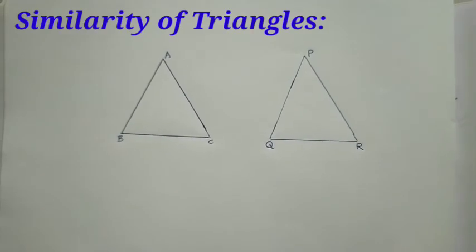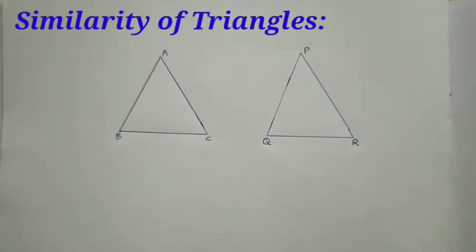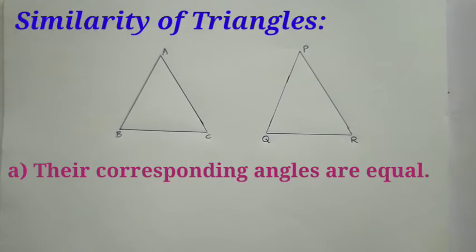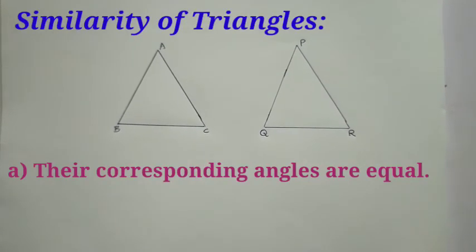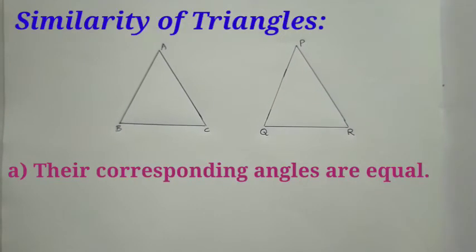In similarity of triangles if we say two triangles are similar then it should obey the condition. First condition their corresponding angles are equal.